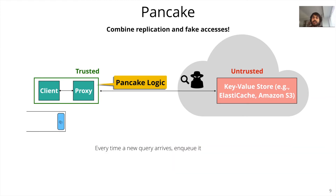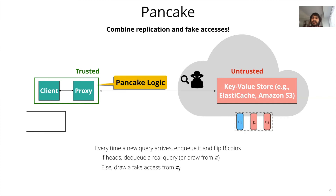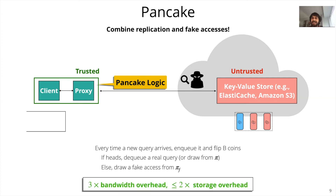In particular, whenever a new query comes in from a client, we enqueue it at the Pancake proxy. We then flip B coins, where B is the size of the batch — in this example, B equals three. If the coin flip is heads, we dequeue a query from the queue, or draw an access from the original distribution pi if the queue is empty. If the coin flip is tails, we draw a fake access from the fake distribution pi_f. When the batch is complete, the proxy sends it out to cloud storage. Using a batch size of three, our bandwidth overhead is exactly a factor of three, while our storage overhead is at most a factor of two.